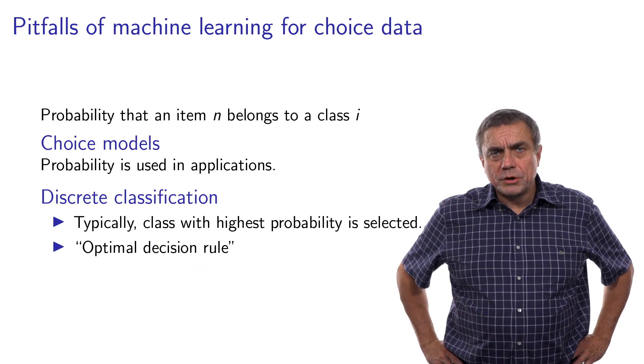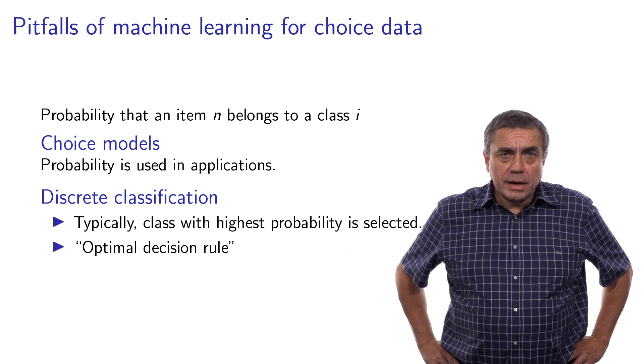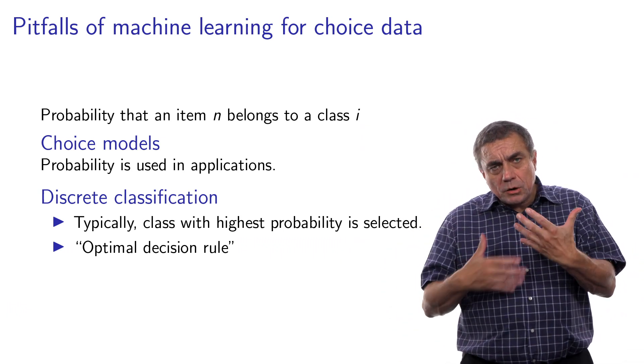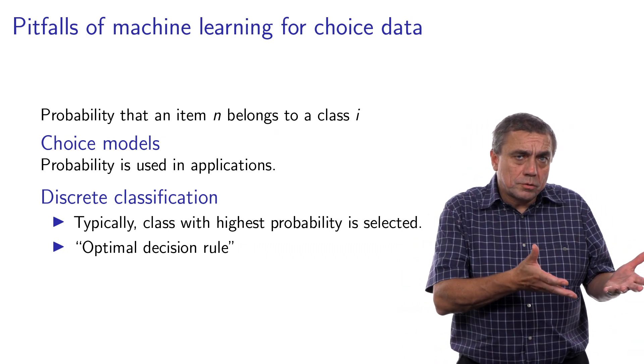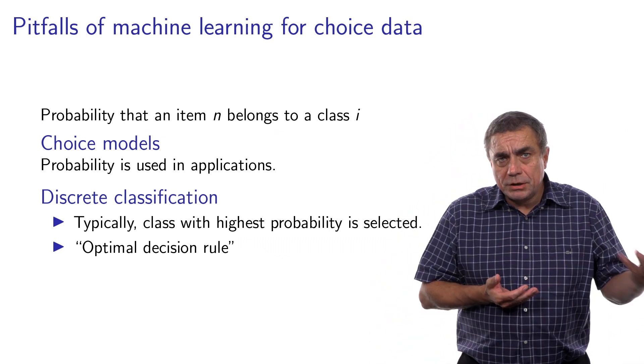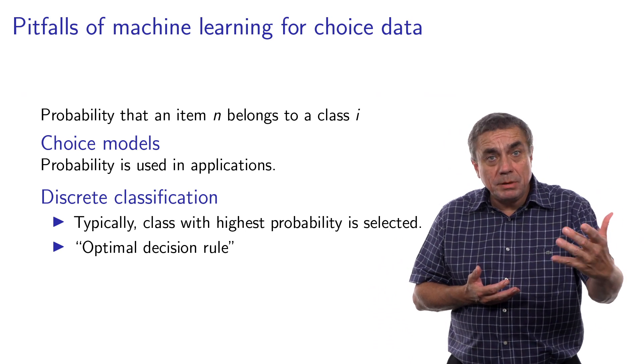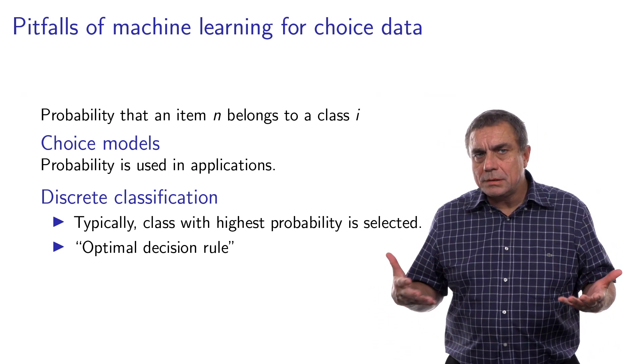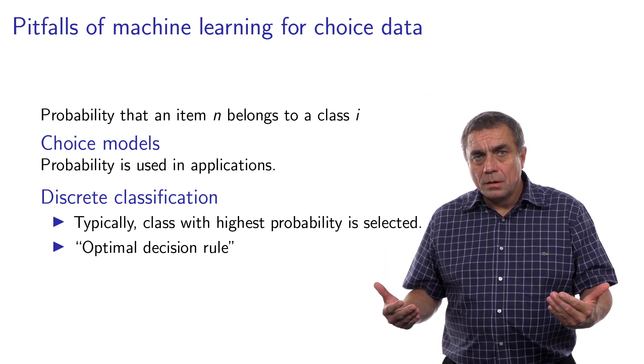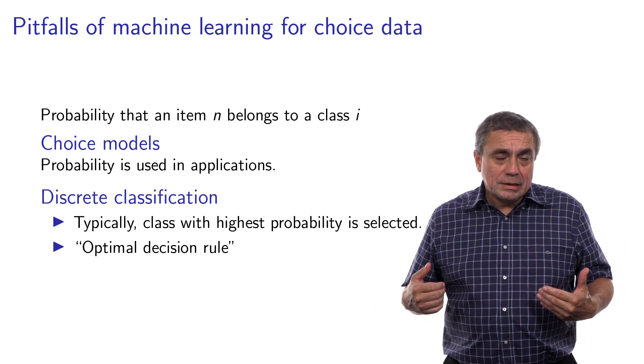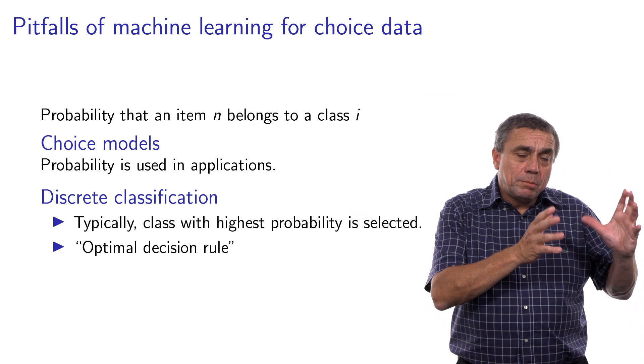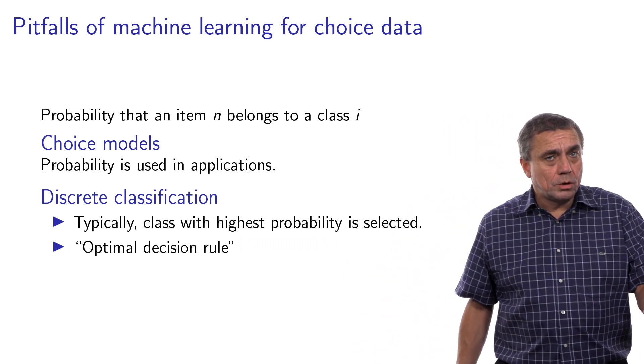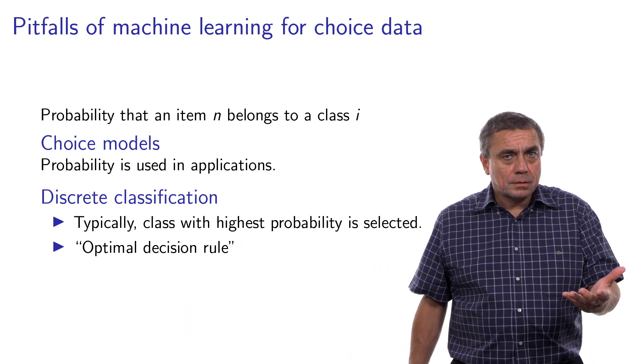There are some pitfalls of machine learning for choice data that we have seen in the literature that are worth reporting. First, choice models by nature are probabilistic. So we calculate the probability that an individual performs a choice. In terms of machine learning, it means that we would be interested in the probability that an item n belongs to a class i. And there are machine learning methods that are probabilistic, but several of them are also deterministic. And when the underlying model is probabilistic, it's very common to see that the class which is labeled as the true class is the one associated with the highest probability. This is usually referred to as the optimal decision rule. But this is not correct.